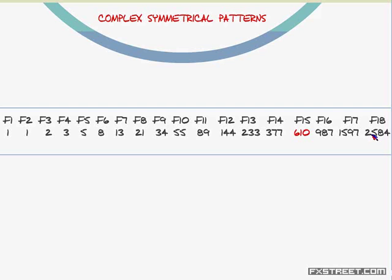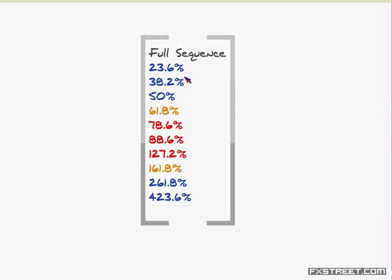Elliott Wave Principle mainly uses the 23.6% for the fourth wave pullbacks and 50 to 61.8% for the second wave retracement. Then we have 161.8% and 261.8% as the projected fifth wave, which is the hardest wave to forecast. Long fives are normally up to 423.6%, which is typical for commodity currencies or commodities.